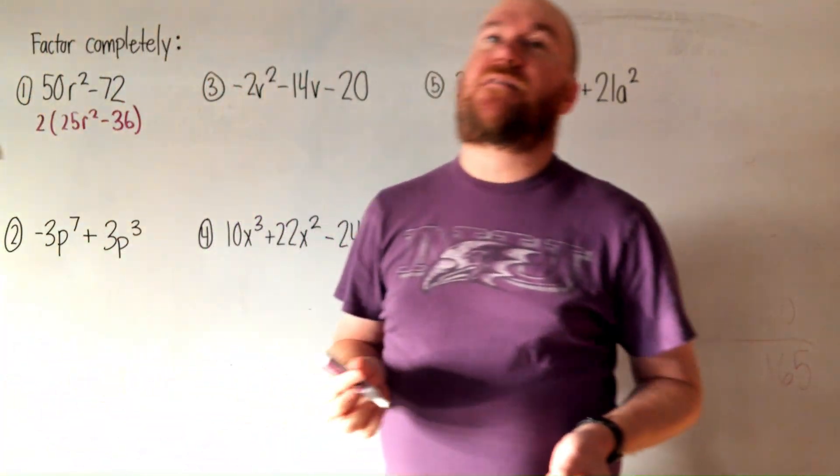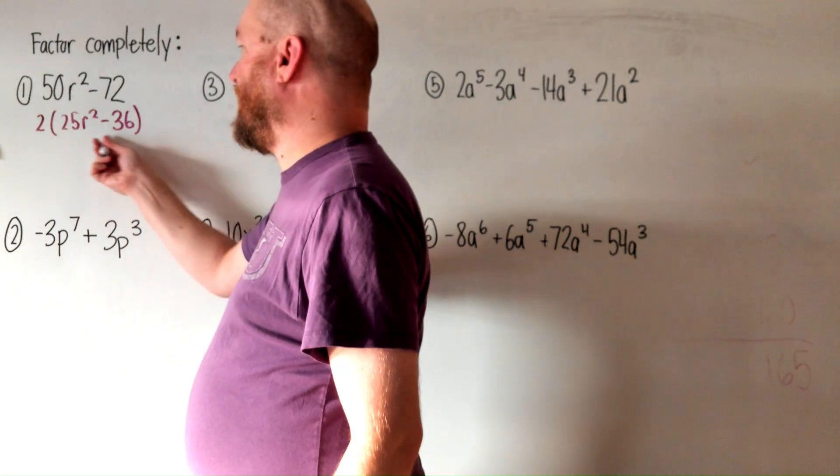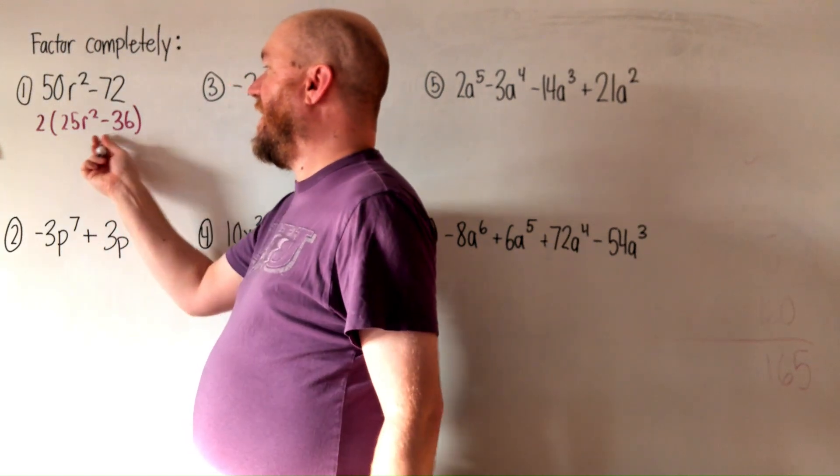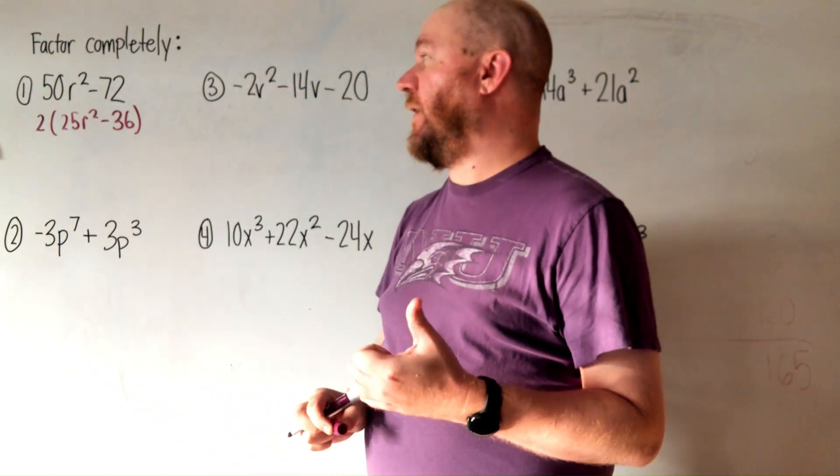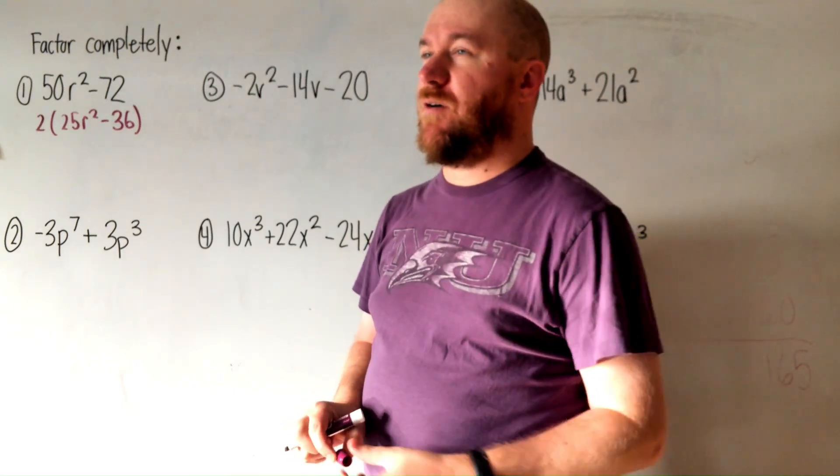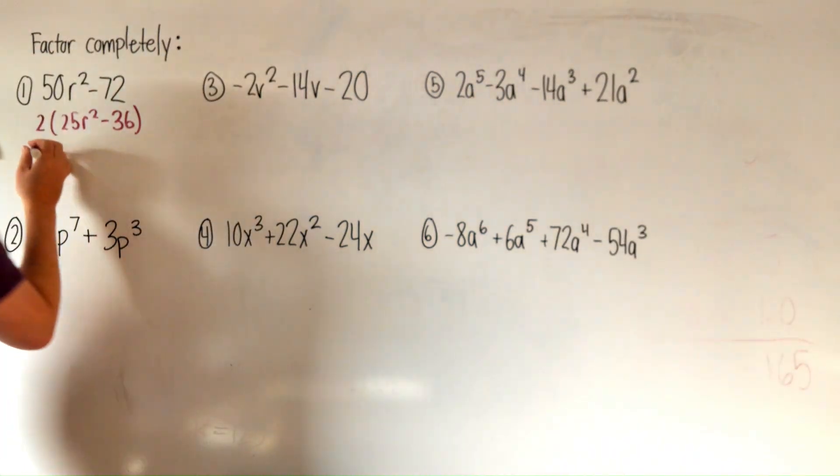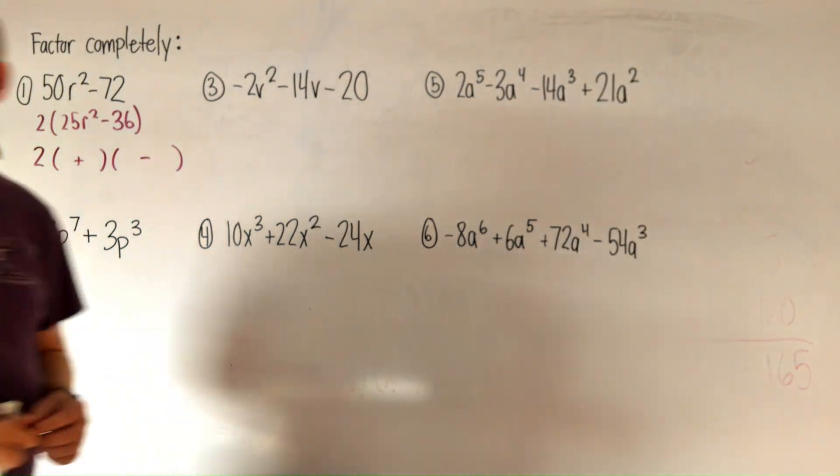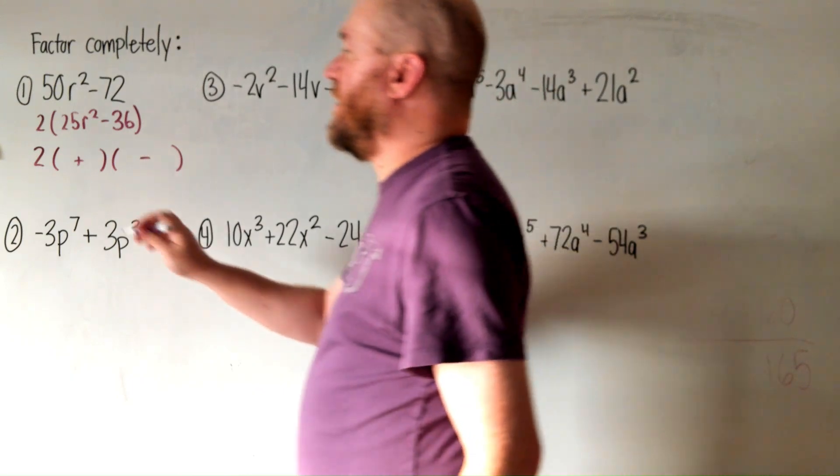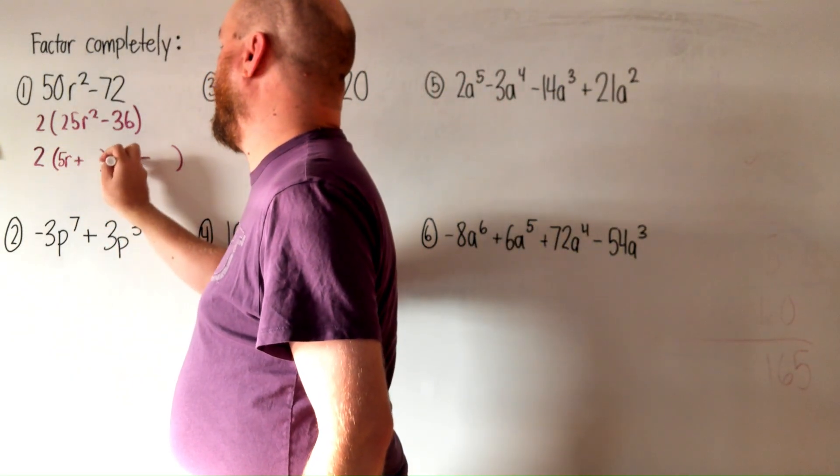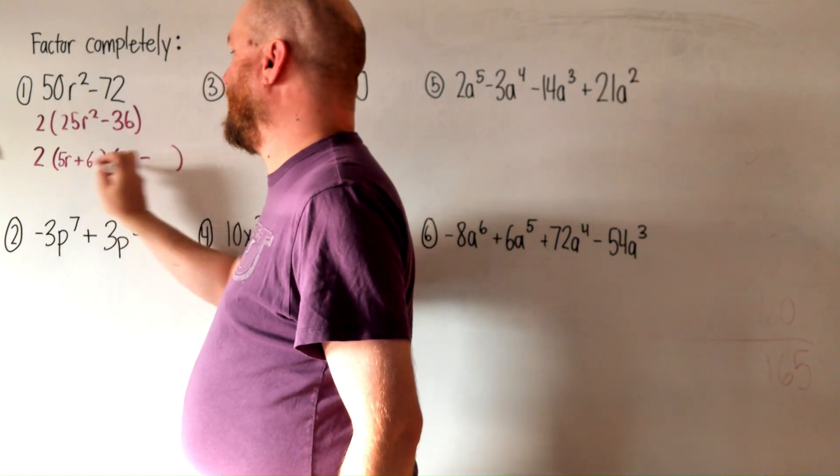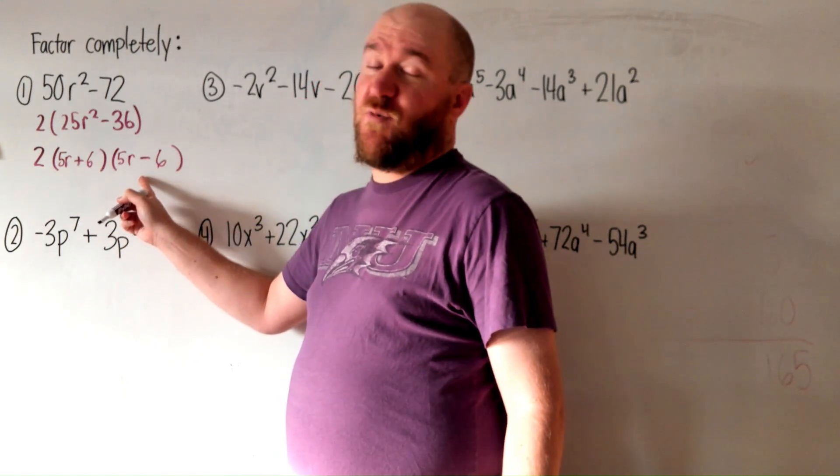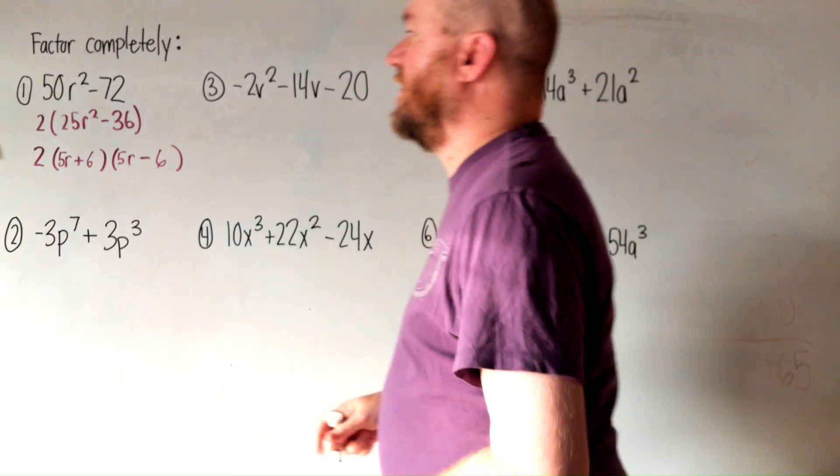Now this two is just going to hang out there while we do the rest of the factoring. And this right here is factorable now again. That's a difference of two squares. It's two things with a minus sign and everything involved is a perfect square. And to factor one expression like that, we make two parentheses, one with a plus and one with a minus. And then we square root everything involved. So 25R squared would be 5R and we write that twice. And the square root of 36 is 6. And then we check to see if that can't be factored anymore. So this is our answer to number one.